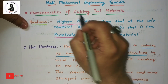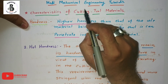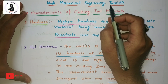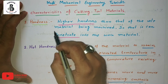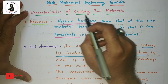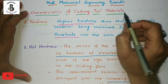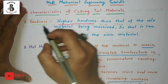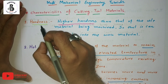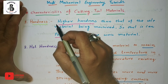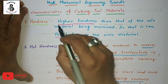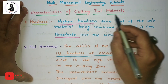Welcome to my YouTube channel, Modi Mechanical Engineering Tutorials. Today in this lecture I would like to discuss some of the good characteristics of cutting tool materials. The first essential characteristic is hardness, which is an essential condition for cutting tool materials.